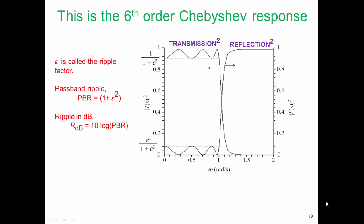And the ripple in dB is just 10 log of PBR. So when people express ripple, they will usually either use the ripple in dB or they will talk about the ripple factor.